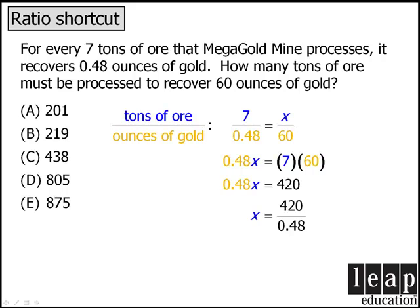Now at this point we can save considerable time by recognizing that 420 divided by 0.5 is equal to 840. So we know that our answer is somewhere around 840. It could be answer choice D or E.